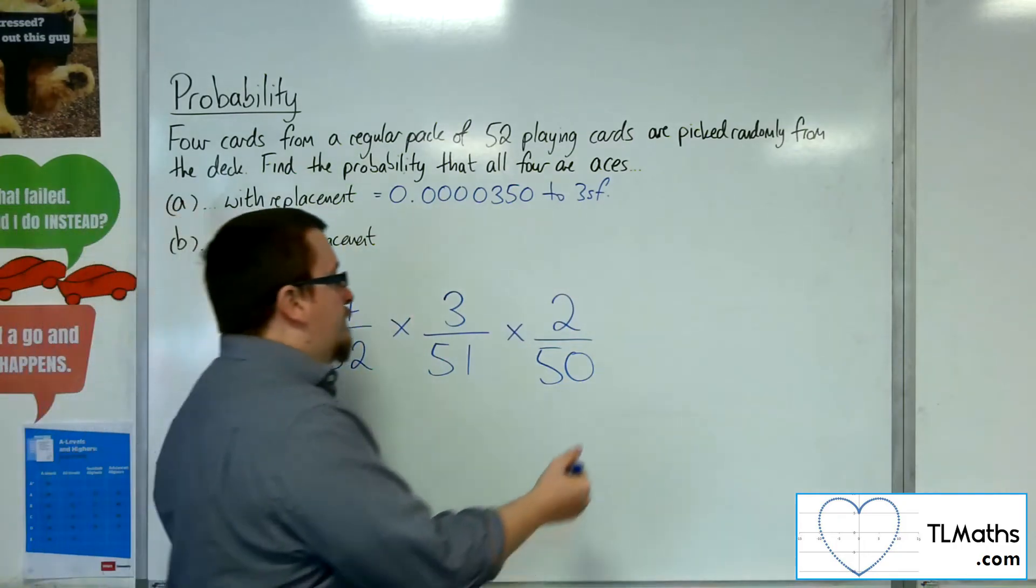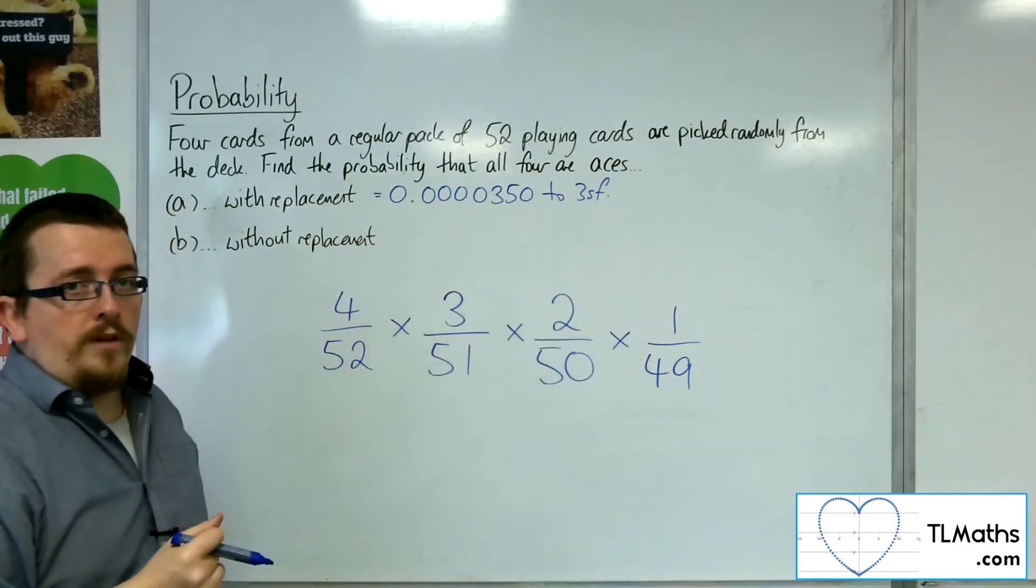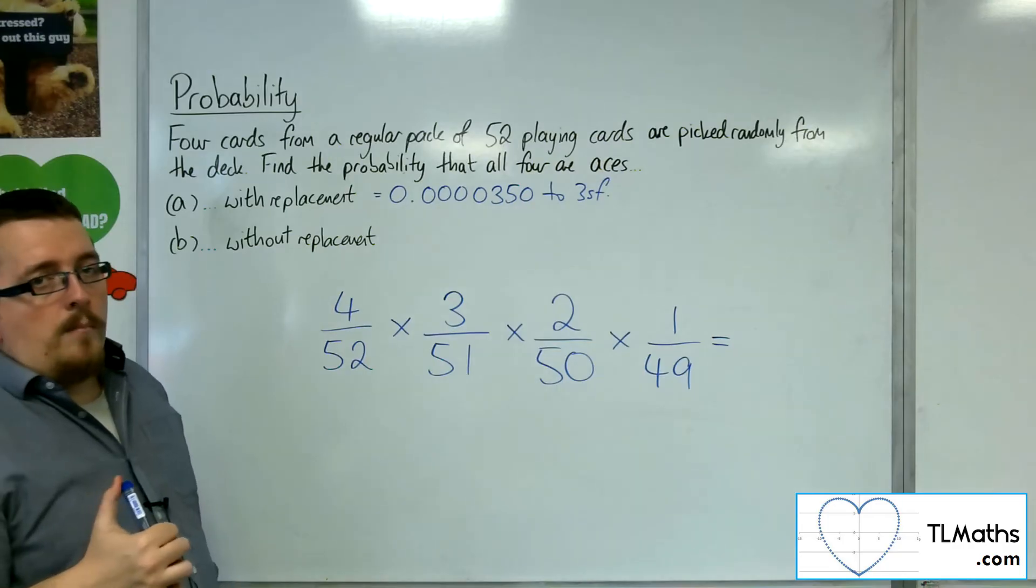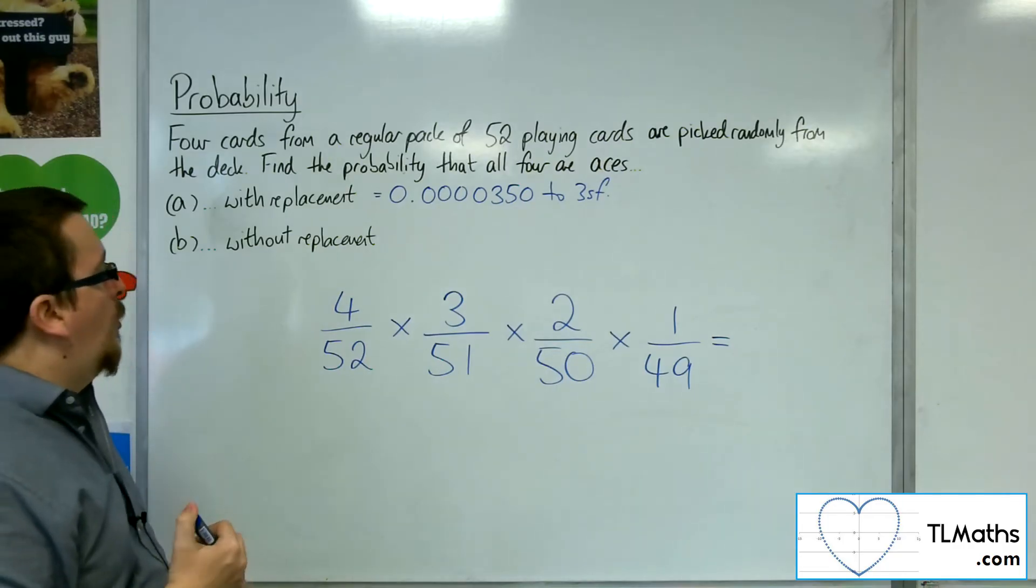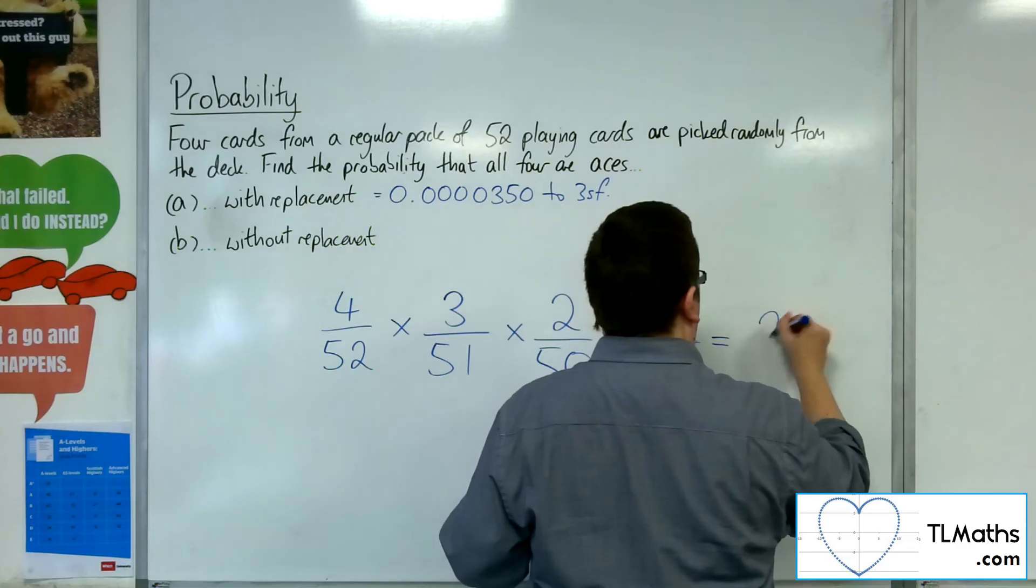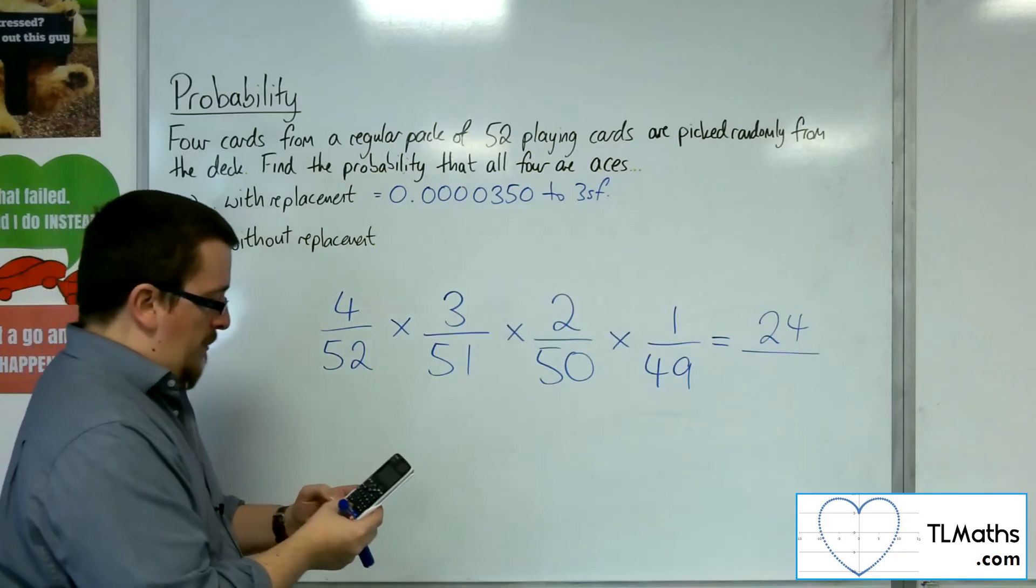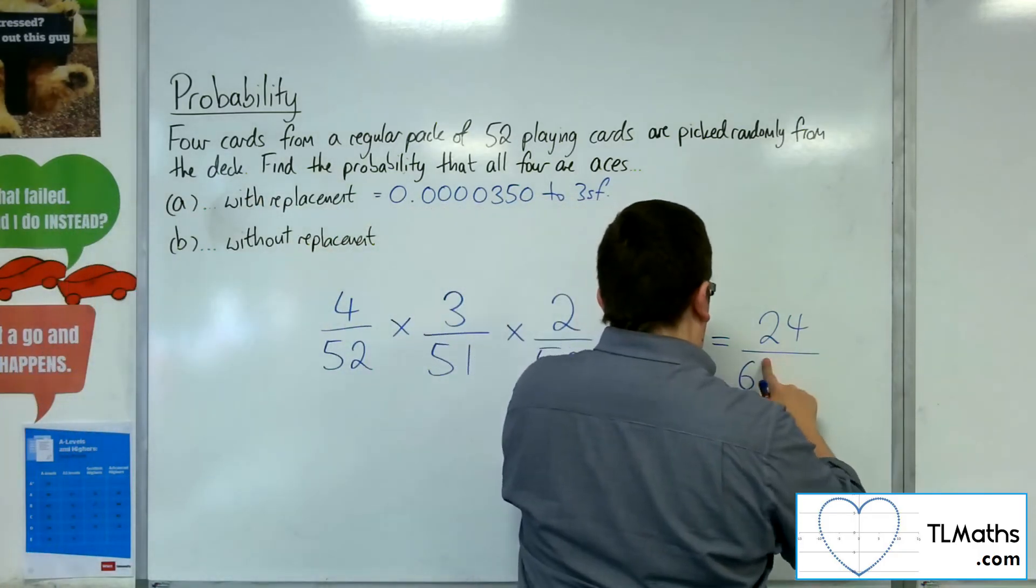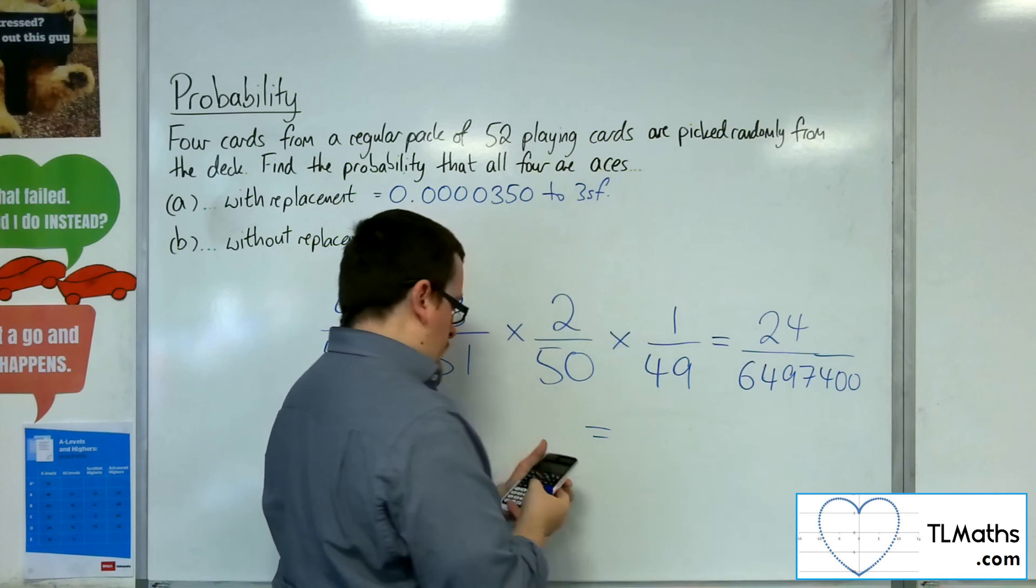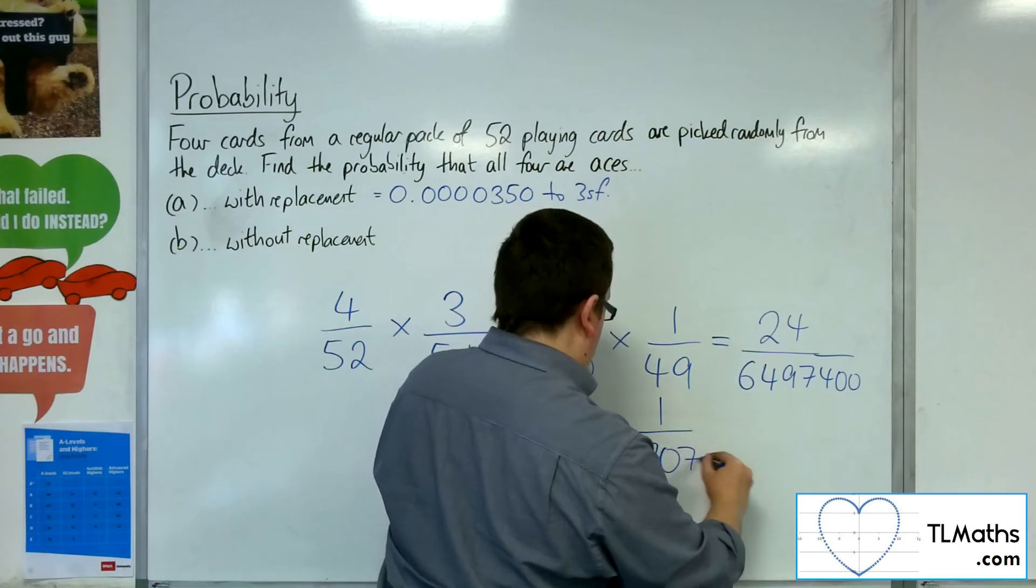I pick it out, I remove it, leaving me with just 1 over 49 chances left. So this will be my probability of picking out all four aces. So I've got 4 times 3 times 2 times 1, so 24, out of 52 times 51 times 50 times 49, so 6,497,400, which is 1 over 270,725.